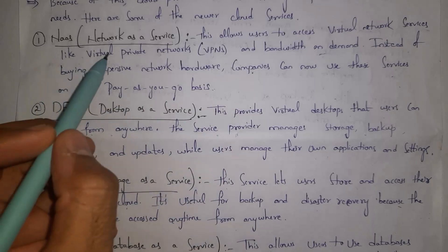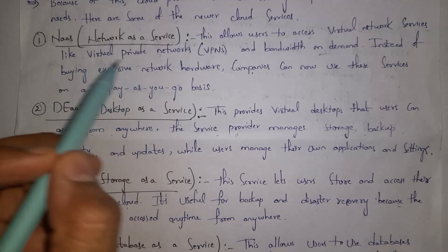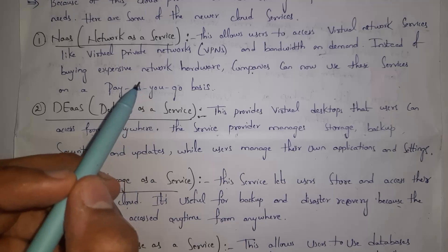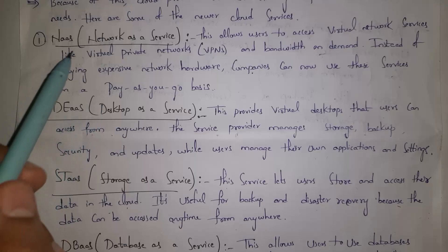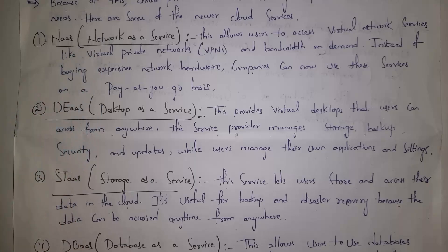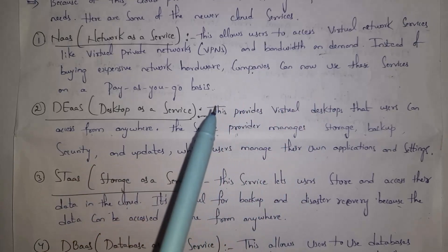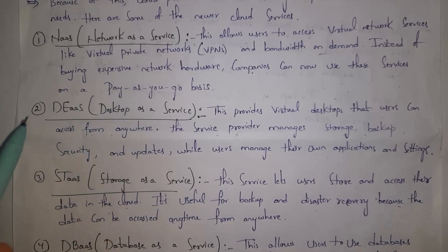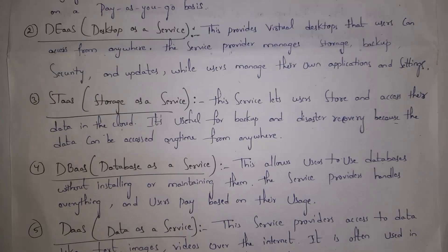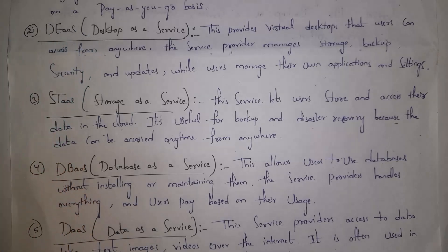Normally, if you want to establish a private network in your software company, you need to purchase expensive network hardware like routers, switches, firewalls, wires, etc., which is very costly. But cloud provides you virtual network services where you can create virtual private networks online, select the bandwidth — that is, the speed — of the network, and pay only for how much time you use it.